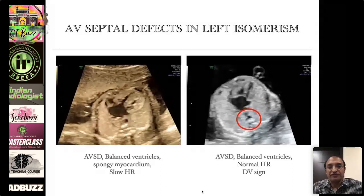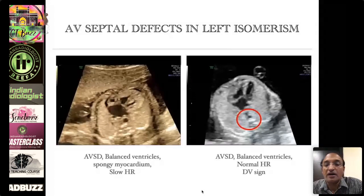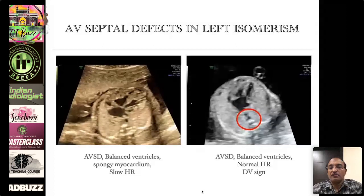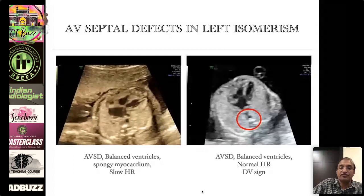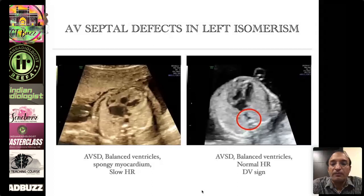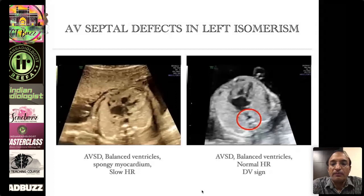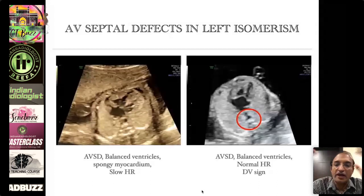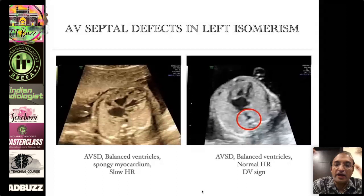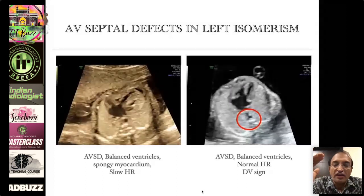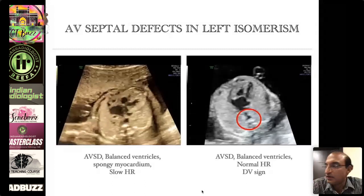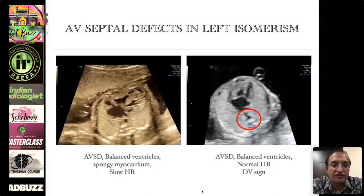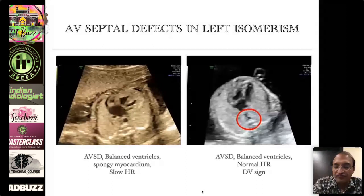Unbalanced AV septal defect and AV septal defect with the double vessel sign of azygos continuation are part of heterotaxy syndrome. The prognostic importance is that these entities are not associated with Down syndrome, so you do not need karyotyping for this condition. However, a balanced AV septal defect has a 50% association with trisomy 21, and that is where you would do amniocentesis and karyotyping. It is very important to distinguish between balanced AV septal defect seen in trisomy 21 versus AV septal defect seen in isomeric or heterotaxy hearts, where you get either an unbalanced AV septal defect or interrupted IVC as shown by the double vessel sign.